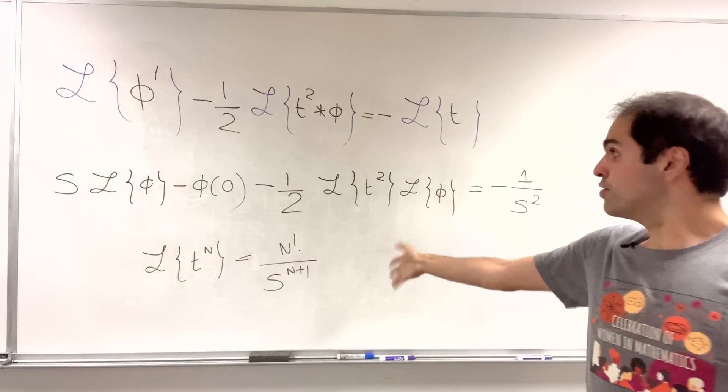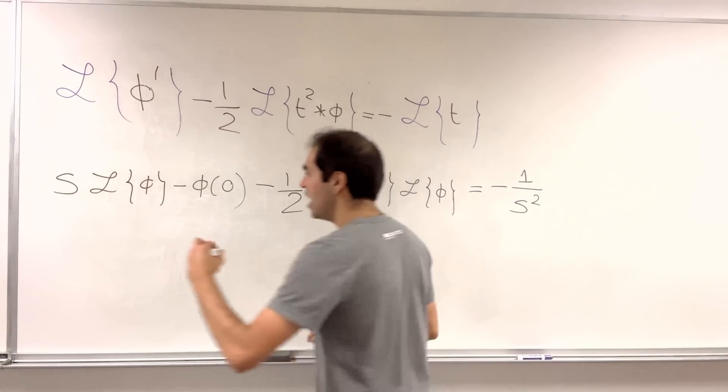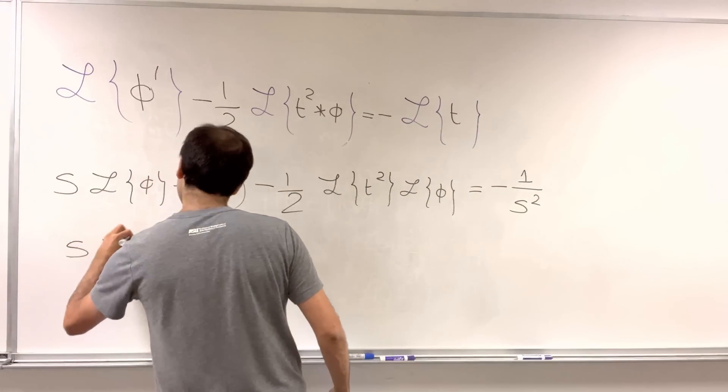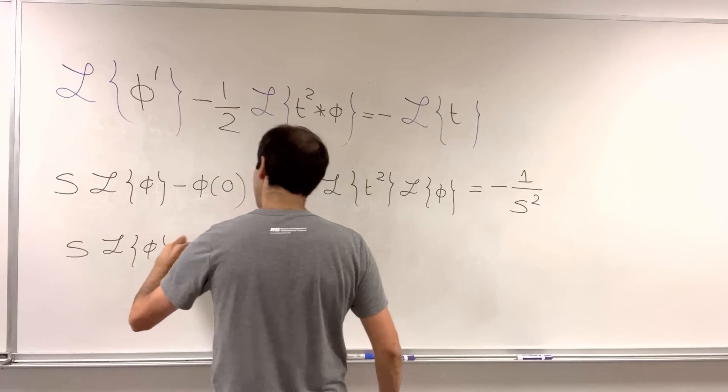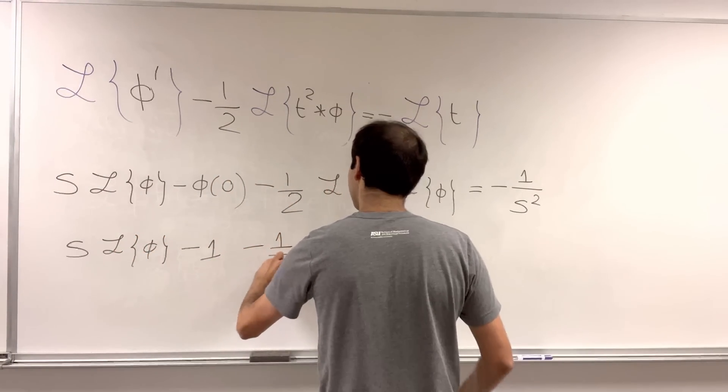And then the rest is just plugging in and calculating, just like math. So, what we get now is S L of phi. So, the initial value was one minus one-half.